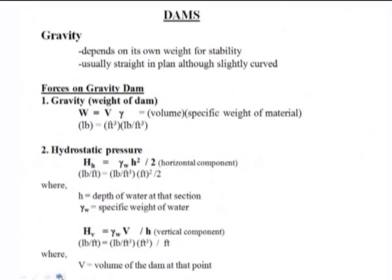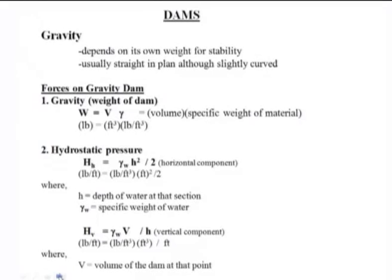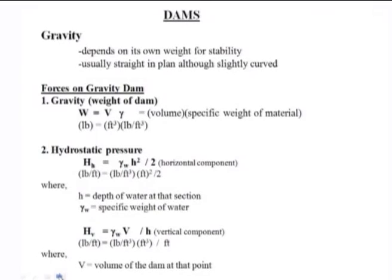A gravity dam depends on its own weight for stability. The stability analysis is done based on its own weight, and the dam is usually straight in plan, though slightly curved. The forces acting on a gravity dam include gravity — its own weight — calculated as W = V × γ, where V is the total volume and γ is the unit weight of the material in Newtons per meter cubed or pounds per feet cubed.